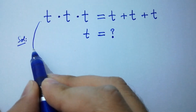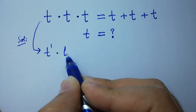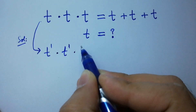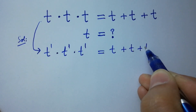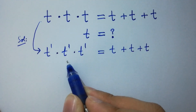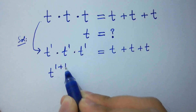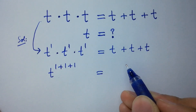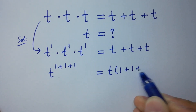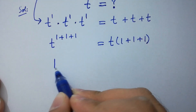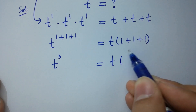This question is the same as t to the power 1 times t to the power 1 times t to the power 1 equal to t plus t plus t. On the left-hand side, the base is the same so we add the powers, giving t to the power 1 plus 1 plus 1. On the right-hand side, t can be factored out, giving 1 plus 1 plus 1.